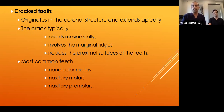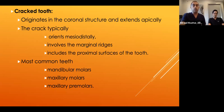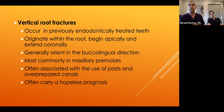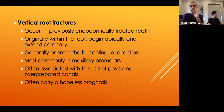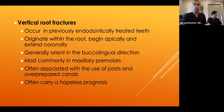A cracked tooth originates in the coronal structure and extends apically, typically oriented mesiodistally, involves the marginal ridges, includes the proximal surface, and is most commonly seen on mandibular molars, maxillary molars, or maxillary premolars. Vertical root fractures occur in previously endodontically treated teeth, originate within the roots, begin apically and extend coronally, generally oriented in the buccal-lingual direction, most commonly on maxillary premolars, often associated with posts or over-preparation of the canal.